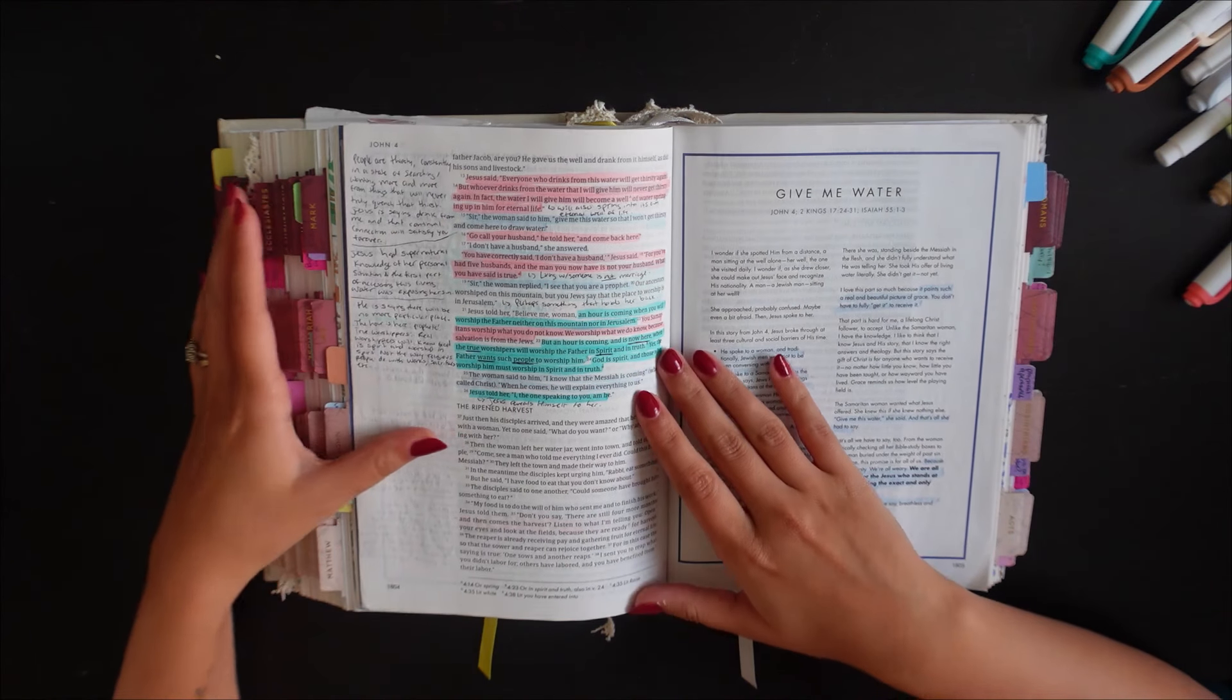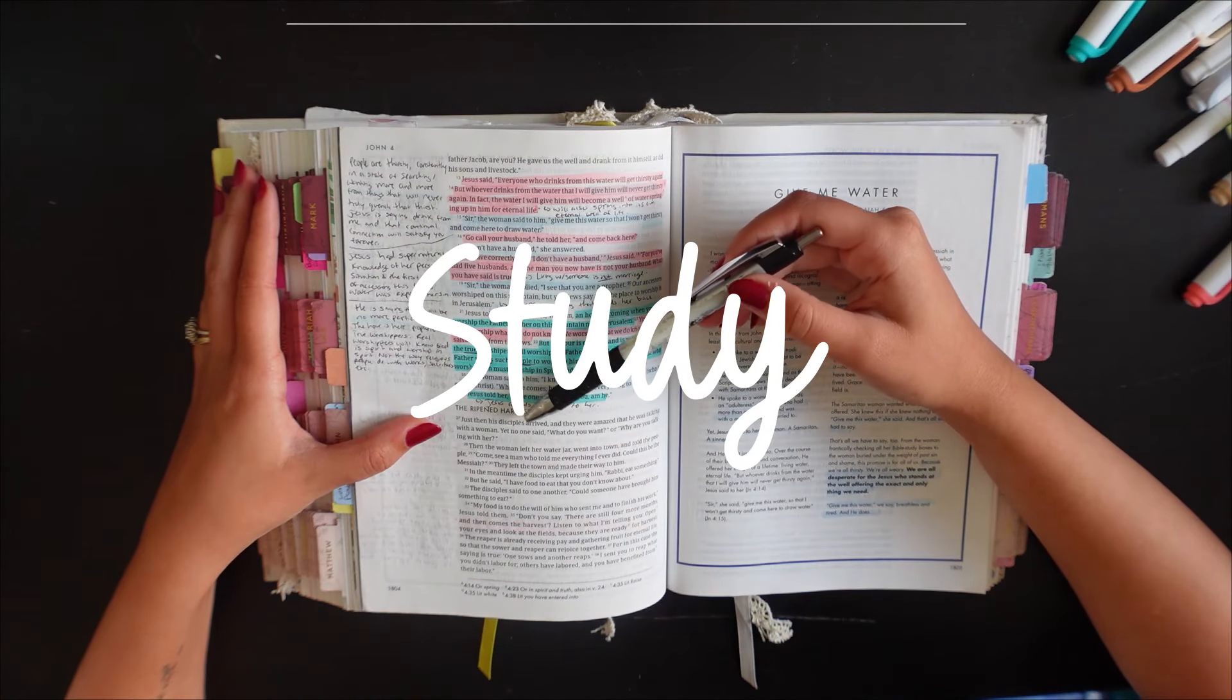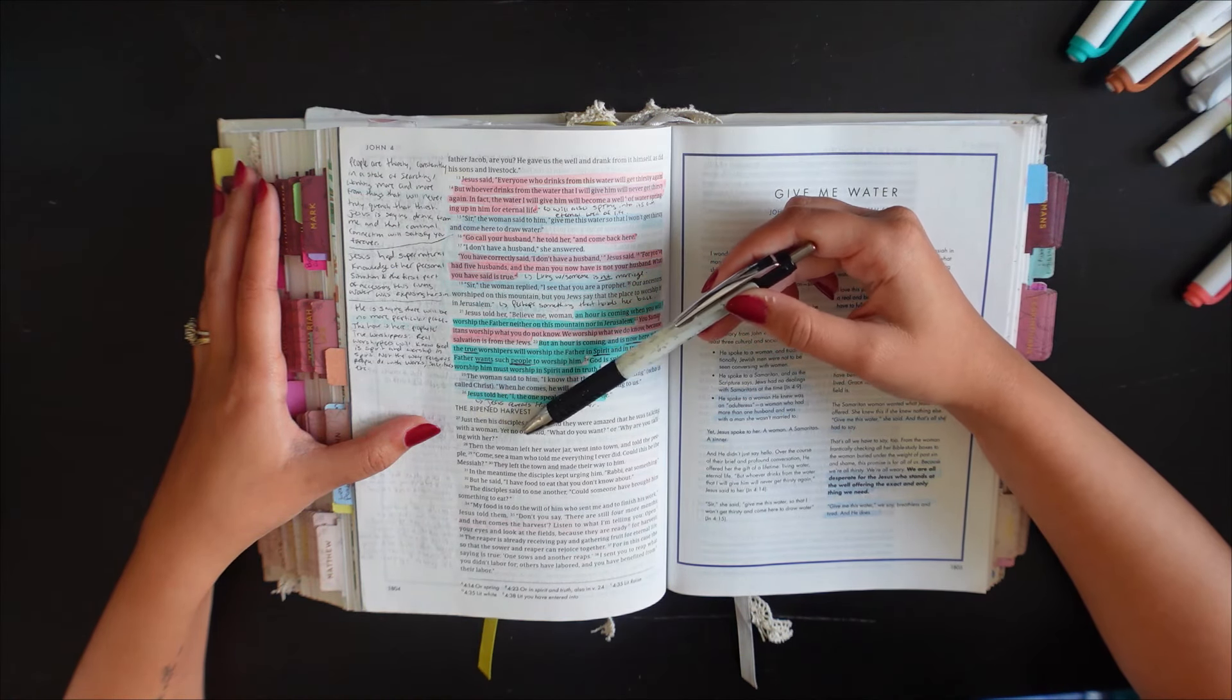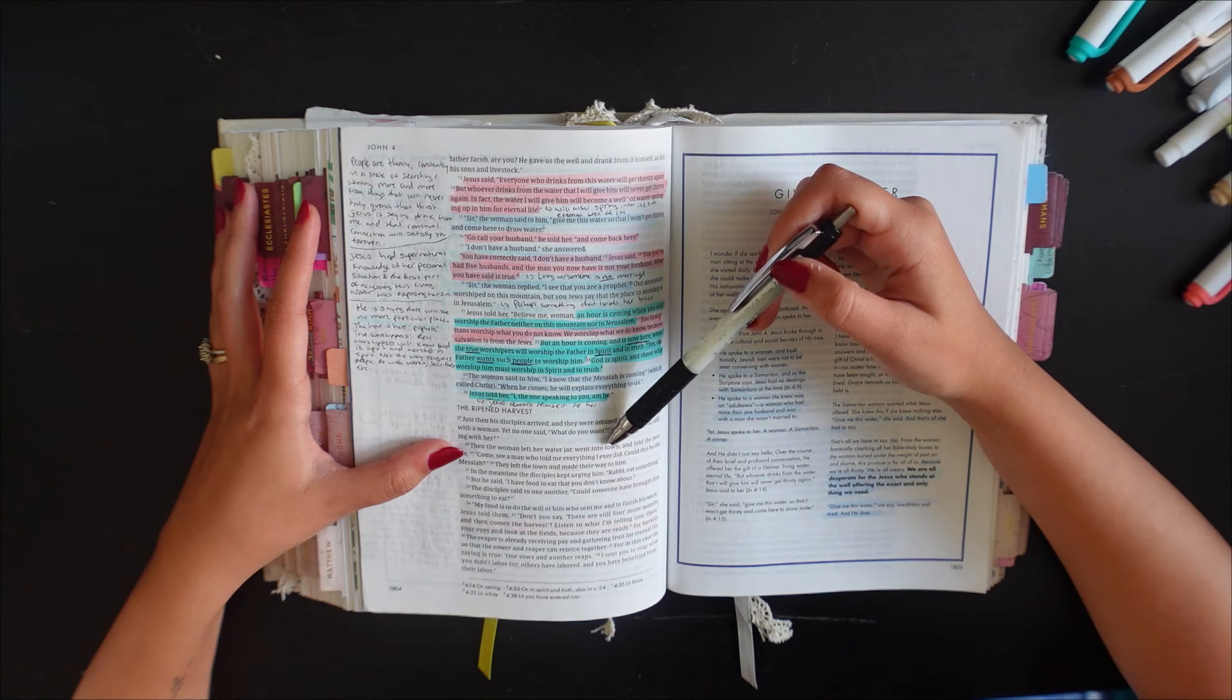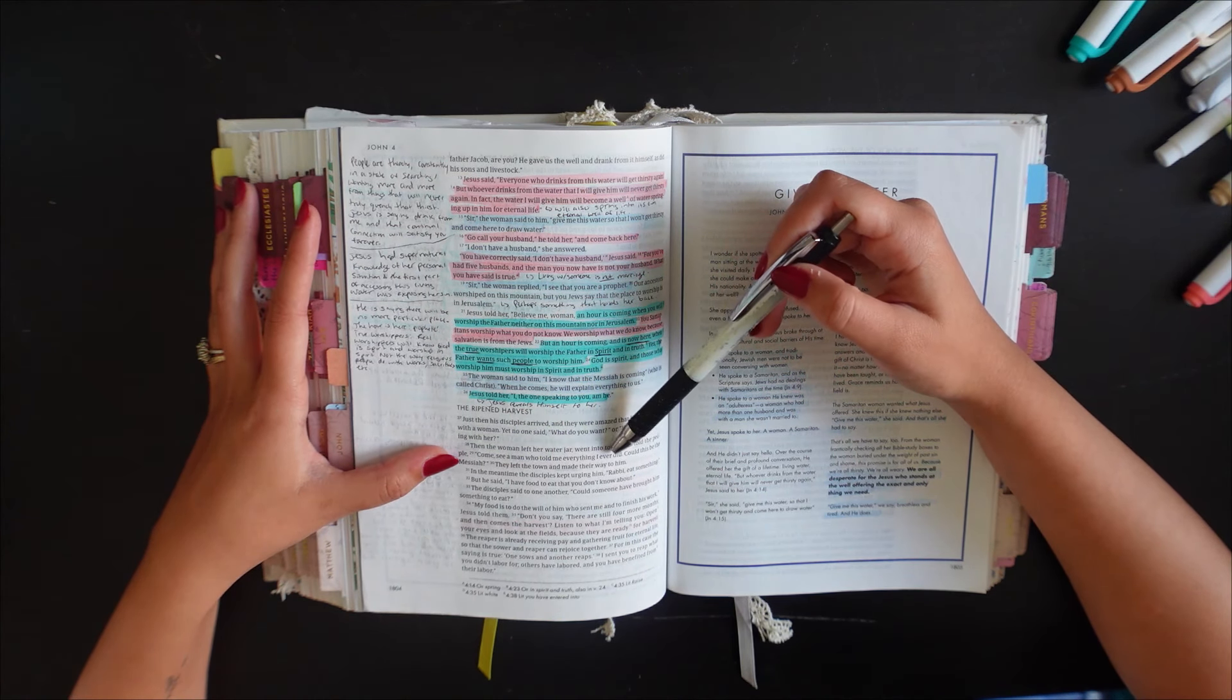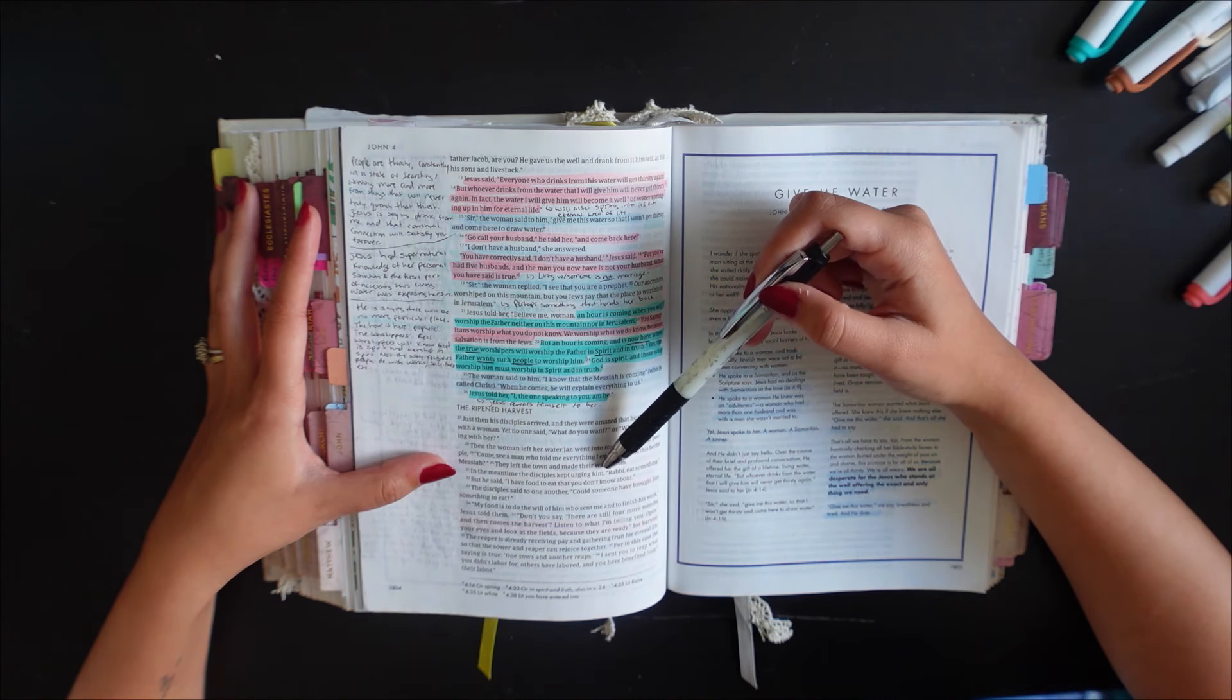All right everybody so let's start out at verse 27 in chapter 4. Just then his disciples arrived and they were amazed that he was talking with a woman yet no one said what do you want or why are you talking with her? Then the woman left her water jar went into town and told the people come see a man who told me everything I ever did. Could this be the Messiah? They left the town and made their way to him.